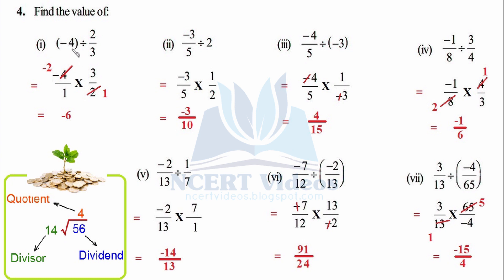To divide fractions or rational numbers, flip the divisor (take its reciprocal — numerator becomes denominator and denominator becomes numerator) and convert division to multiplication. First part: −4/1 ÷ 2/3. Flip 2/3 to get 3/2. So −4/1 × 3/2. Cancel: 4/2 = 2; then 2 × 3 = 6 with minus sign. Answer: −6/1 = −6.